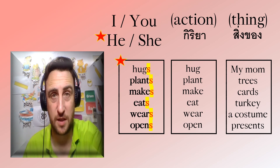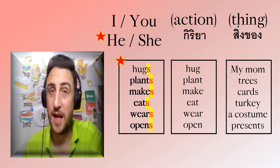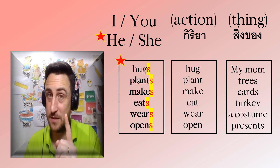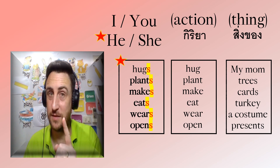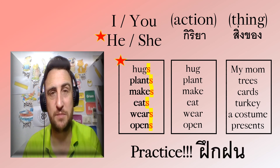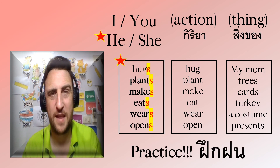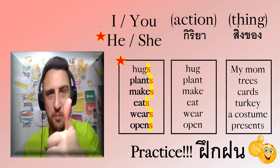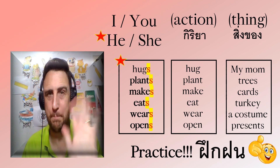Action plus thing — for I and you, no S. For he and she, action plus S, then thing. Please practice, and I will see you for the next class. Good job. Bye bye.